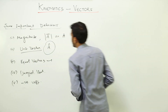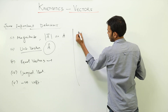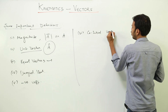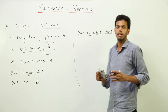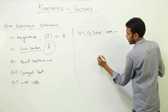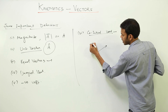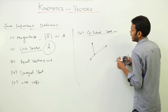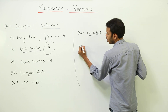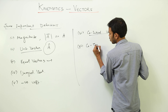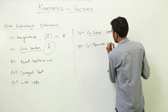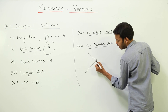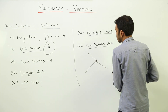Then we have co-initial vectors. Co-initial vectors are those vectors which have a common starting point. For example, vectors starting from the same point — all these vectors are co-initial. Co-terminus vectors are those vectors which terminate or end at a common point. These three vectors ending at a common point are co-terminus vectors.